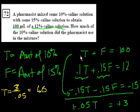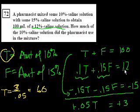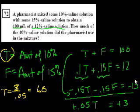This is a little confusing at first. A good place to start is to say they want to know how much of the 10% saline solution was used, so set that as a variable and set another for the other solution. Adding them gives 100 milliliters. The tricky part is figuring out how much saline each solution contributes, and when you add that up it equals 12 milliliters. Next question.